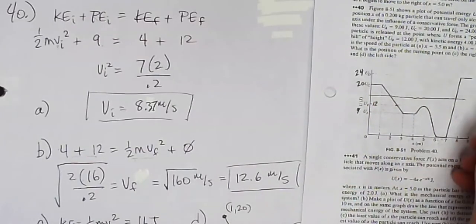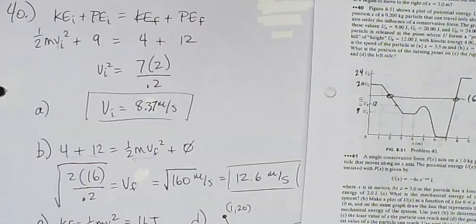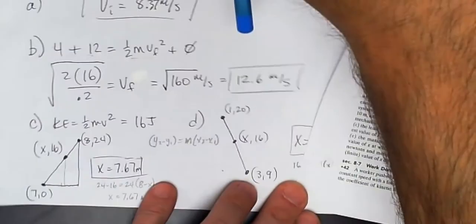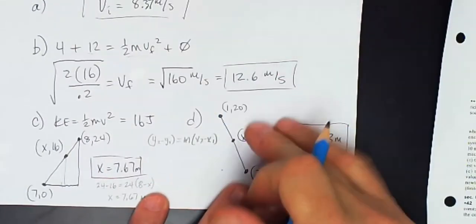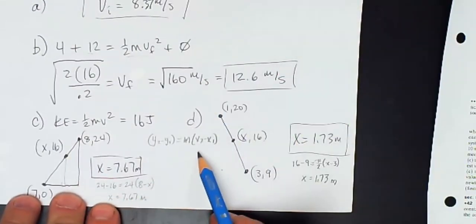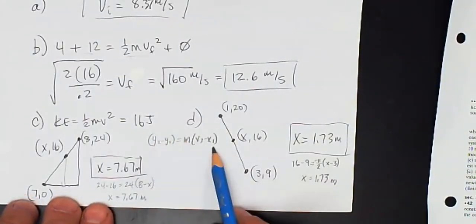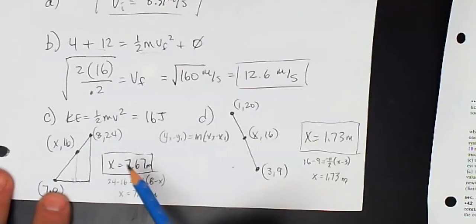So I'm going to use the point-slope formula. The point-slope formula is just the definition of slope rearranged. We get the point-slope formula. So on the right side,